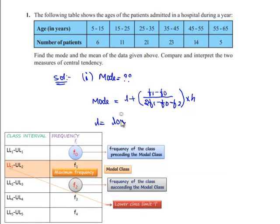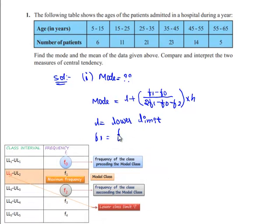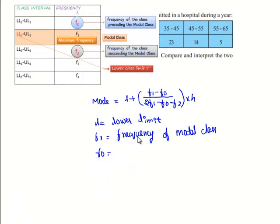Where L is the lower limit of the modal class, F1 is the frequency of the modal class, and F0 is the frequency preceding the frequency of the modal class, known as the preceding frequency.